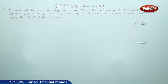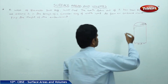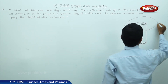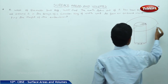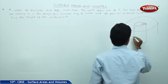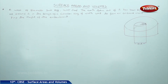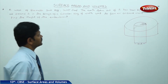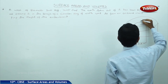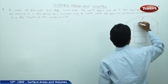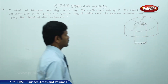The earth taken out has been spread evenly all around it in the shape of a circular ring. The width of the ring is 4 meters. Therefore, we have to find out the outer radius.